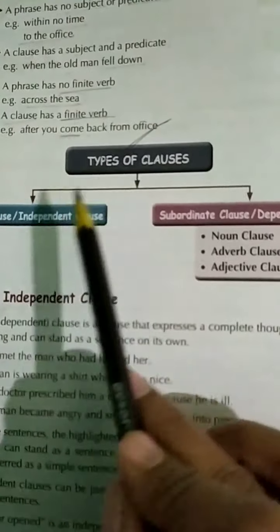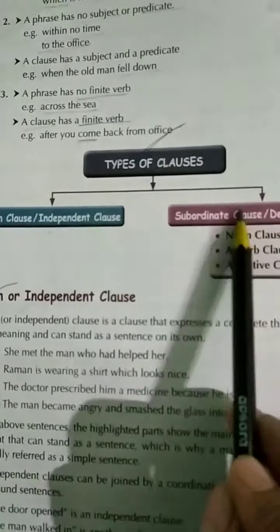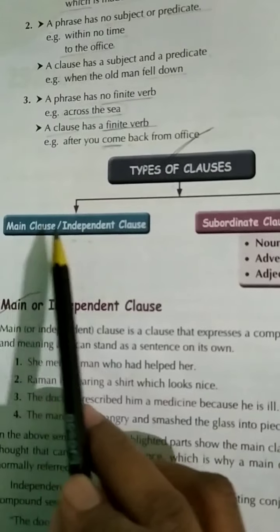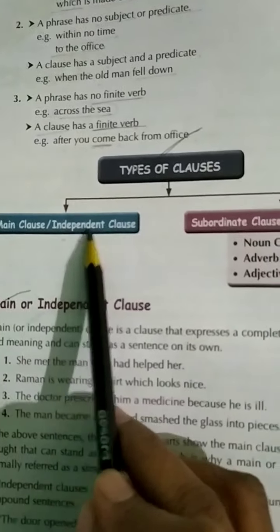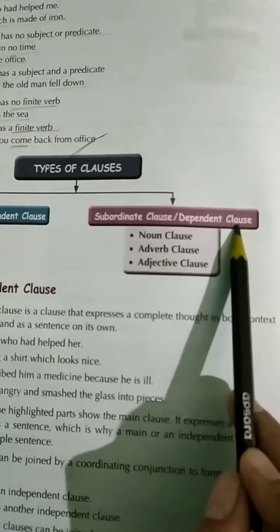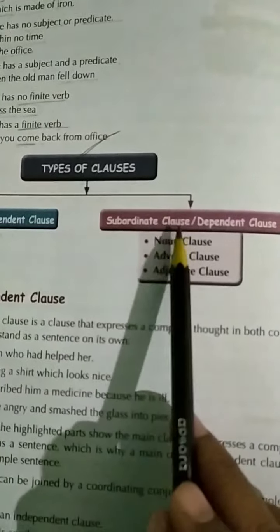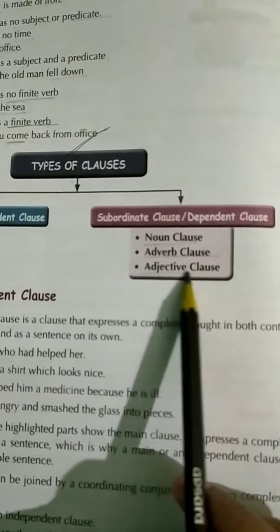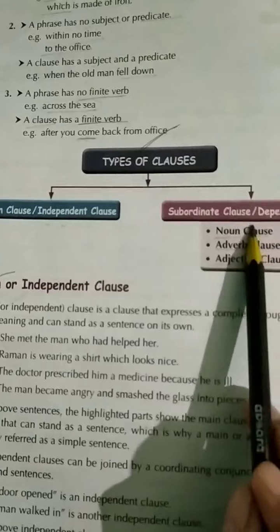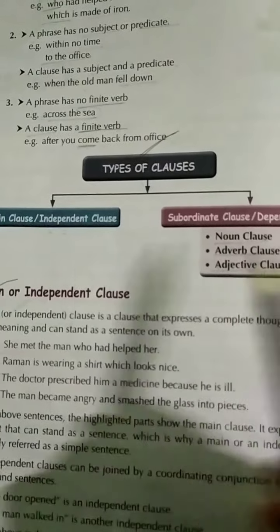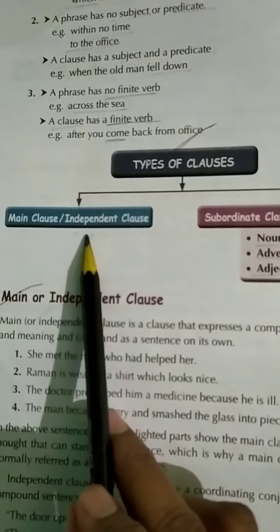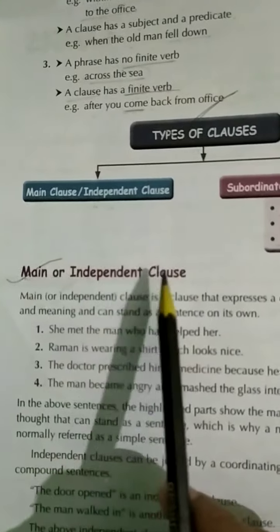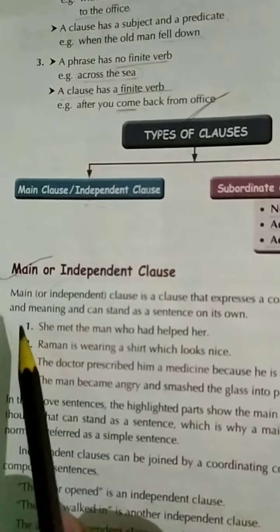Now, what are the types of clauses? Clauses are divided into two major types: first, the main clause or independent clause; and second, the subordinate clause or dependent clause. The subordinate clause is further divided into noun clause, adverb clause, and adjectival clause. First, let us identify what a main clause or independent clause is.